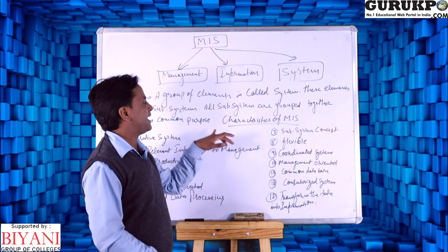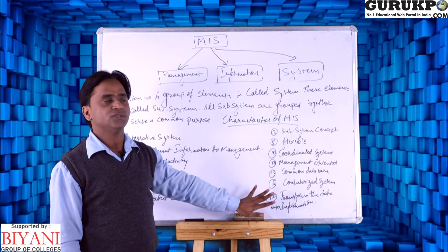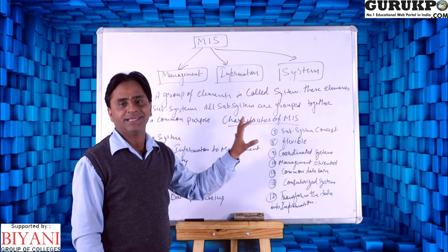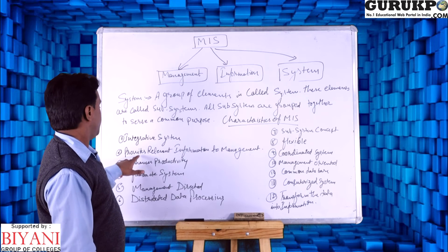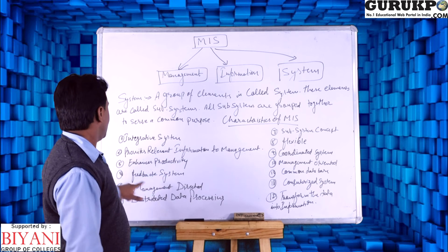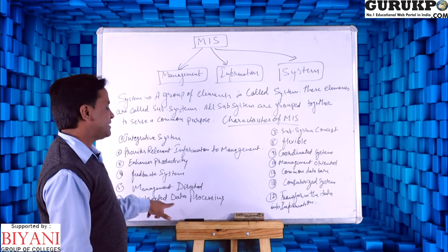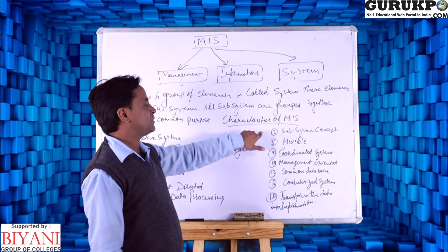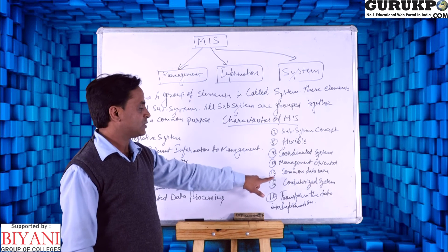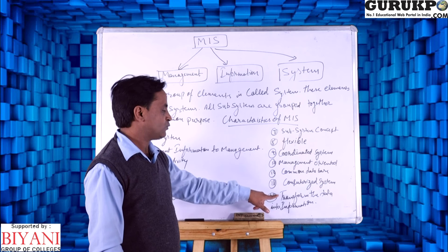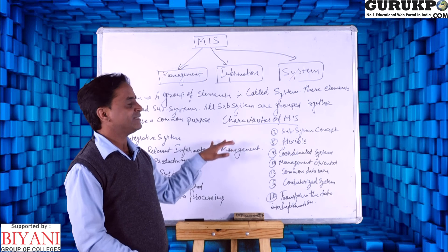Now we will discuss some characteristics of MIS. We have 12 characteristics: integrative system, provide relevant information to management, enhance productivity, feedback system, management directory, distributed data processing, subsystem concepts, flexible coordinated system, management oriented, common data box, computerized system, and transfer of data into information.